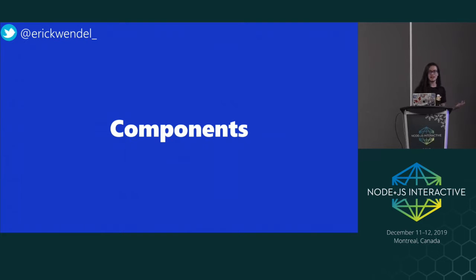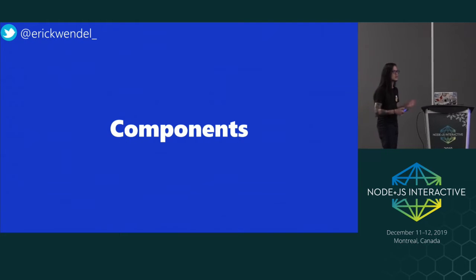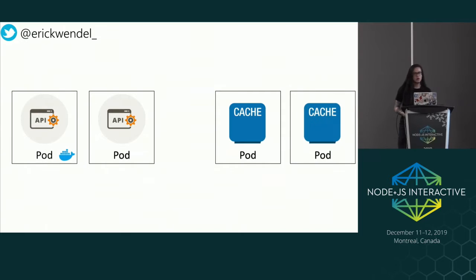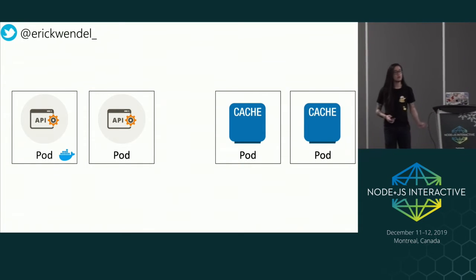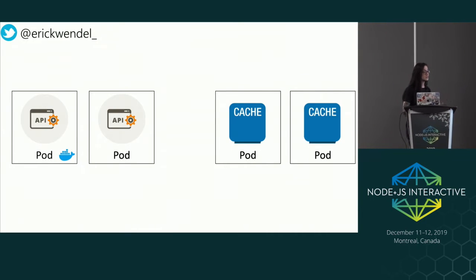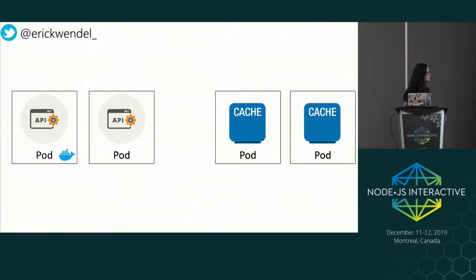Let's talk about the components. When you look at the documentation, there are a lot of concepts to understand. First I'll talk about pods. Pods are the smallest unit of our code. We can have more than one application in each pod, but it's not recommended. You can put your application there, your Docker image, or even your database, but pods are not smart — they need someone to control them.